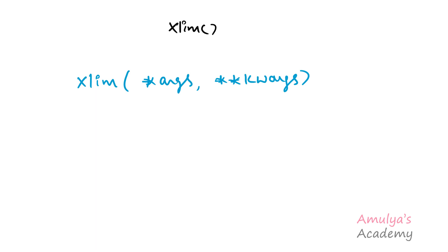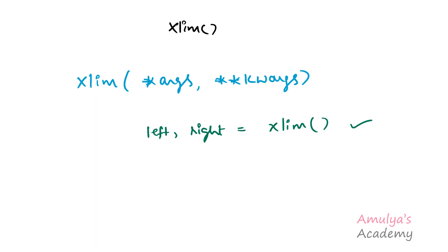This is the general syntax of the xlim function, but usually we will call this function in three different ways. The first one is to get the current axis range. For that, I will take two variables — left and right — for the left value and right value of the range, and call the xlim function as matplotlib.pyplot.xlim. This will give the current axis range of the x-axis.